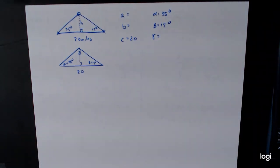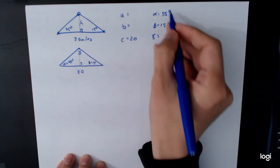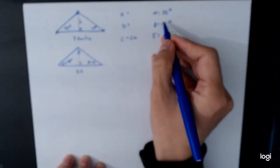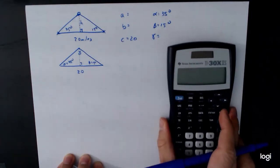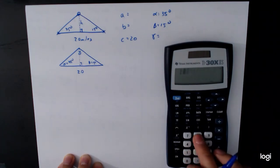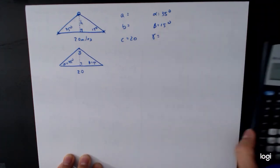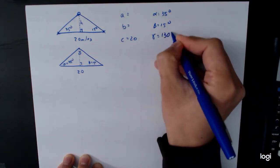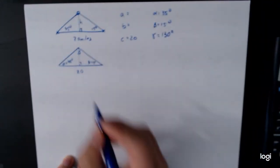So immediately from this we can see that we can solve for the angle gamma because we have two out of the three angles. So you can do this mentally probably, but we'll work it out. 180 minus 35 minus 15 is equal to 130. So this is a 130 degree angle.